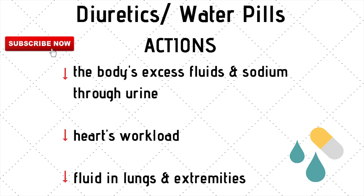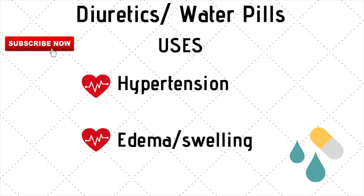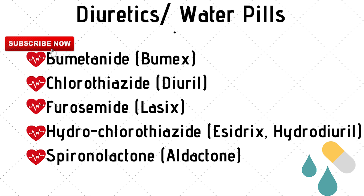Diuretics, or water pills — they decrease the amount of fluid within your blood. When you decrease the amount of fluid or water within your blood, you also decrease the amount of sodium; this is removed through your urine. With less fluid and sodium circulating, your heart has to work less hard, reducing the heart's workload and removing fluid from your lungs and extremities. Diuretics are used for hypertension and edema. Common diuretics include bumetanide (Bumex), chlorothiazide (Diuril), furosemide (Lasix), hydrochlorothiazide, and spironolactone (Aldactone).